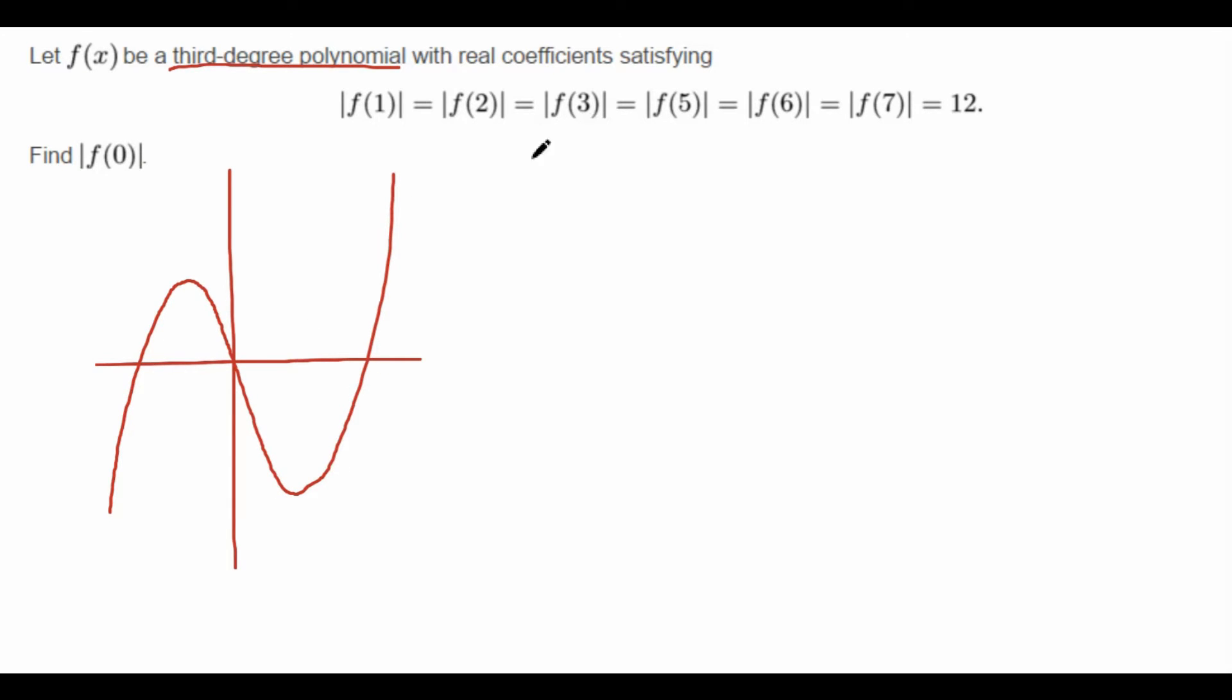Now let's look at the other information we're given. Absolute value f(1), da da da, all this equals 12. So that means f(1), f(2), all the way to f(7), this all equal to plus or minus 12 because their absolute value is equal to 12.